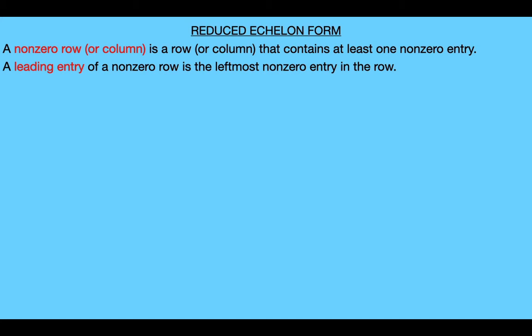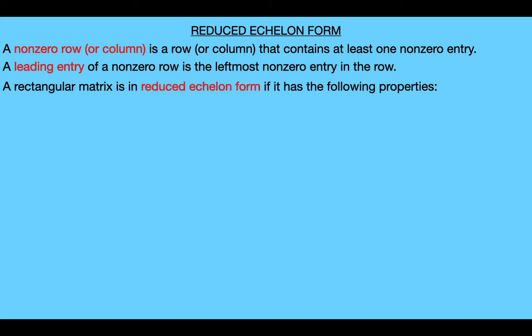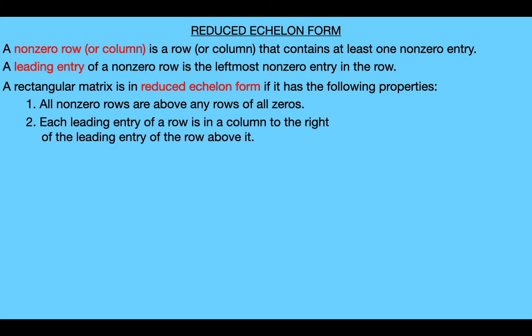With these two definitions we're ready to define what it means for a matrix to be in reduced echelon form. A rectangular matrix is in reduced echelon form if it has the following four properties. First, all non-zero rows are above any rows of all zeros. Second, each leading entry of a row must be in a column to the right of the leading entry of the row above it.